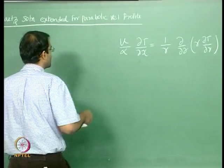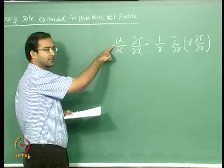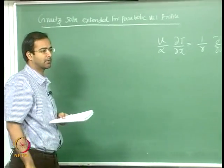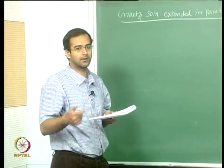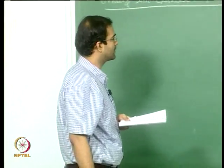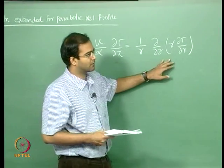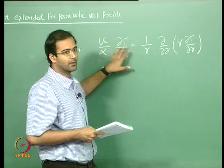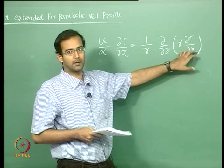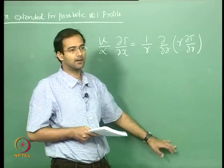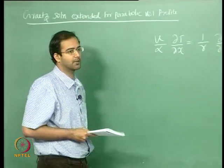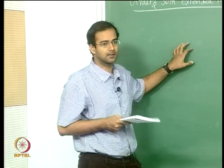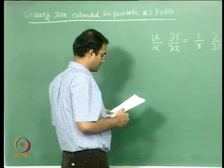Earlier we assumed u to be constant and substituted it as some u_m. Now we have to put in the actual parabolic velocity profile from the hydrodynamically fully developed case. We can do this in dimensional form as in the Graetz problem, but it will be simpler to work in non-dimensional form. So we will introduce non-dimensional variables at the beginning and then substitute them.